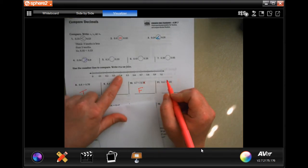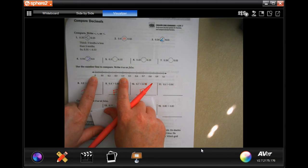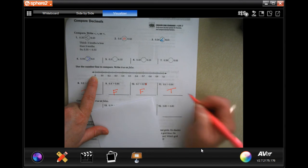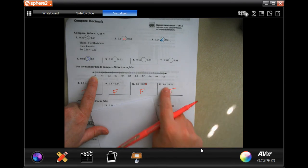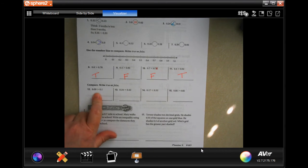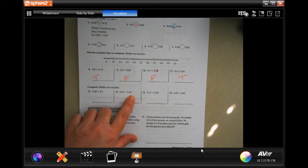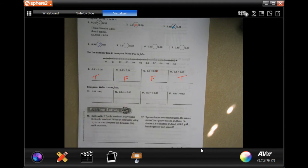Now, 0.7 and 0.70, remember that that 0 doesn't change the value of anything. So, they're both 0.7, which means that it's going to be false, because it says that this one is bigger. That's not bigger, they're the same. So, we have 0.4, and we have 0.04. Well, 0.4 is going to be bigger. That makes that true. So, do the same exact thing here for 12 through 15. You're just going to see if it's true or false.